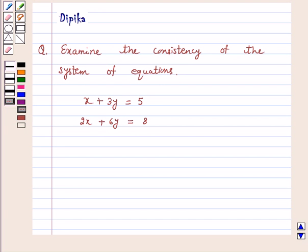We know that a system of equations is said to be consistent if its solution exists, and it is said to be inconsistent if its solution does not exist.